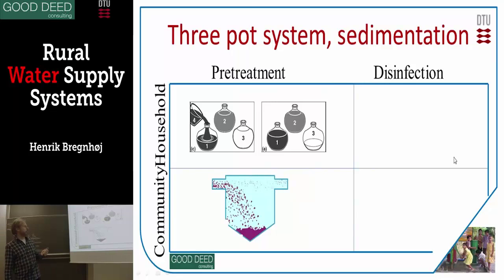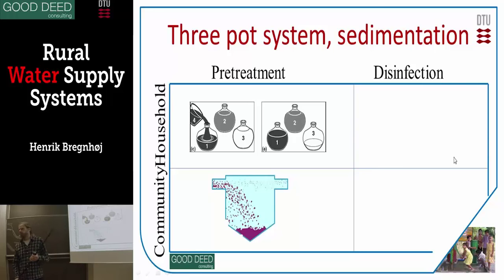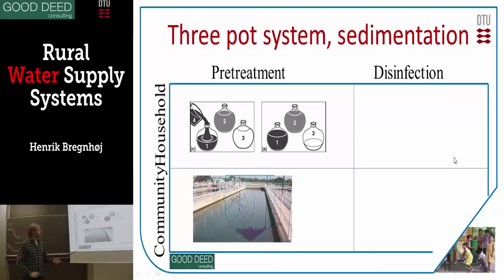Then there's sedimentation. If you have particles in your water, there's the very old household method where you have three pots. You take your dirty water, put it in the first bucket, leave it for one day to settle, then pour it into the second bottle — you now have less dirty water because a lot has sedimented. After two days you pour it into the third one, where you have the clean water. It's a pre-treatment — removing particles, but definitely not enough bacteria. At community scale, you can have a flow where water runs into a sediment tank, all sediments fall to the bottom, and clean water comes out.